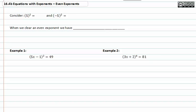Now let's take a look at even exponents. Consider five raised to the second power. We know that that is twenty-five, and negative five raised to the second power is also twenty-five, and it's positive too.